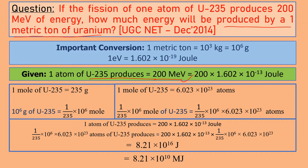We will see the important conversions. Ton to kg, kg to gram, then gram to mole, and mole to atom. One metric ton equals 10^3 kg equals 10^6 gram.